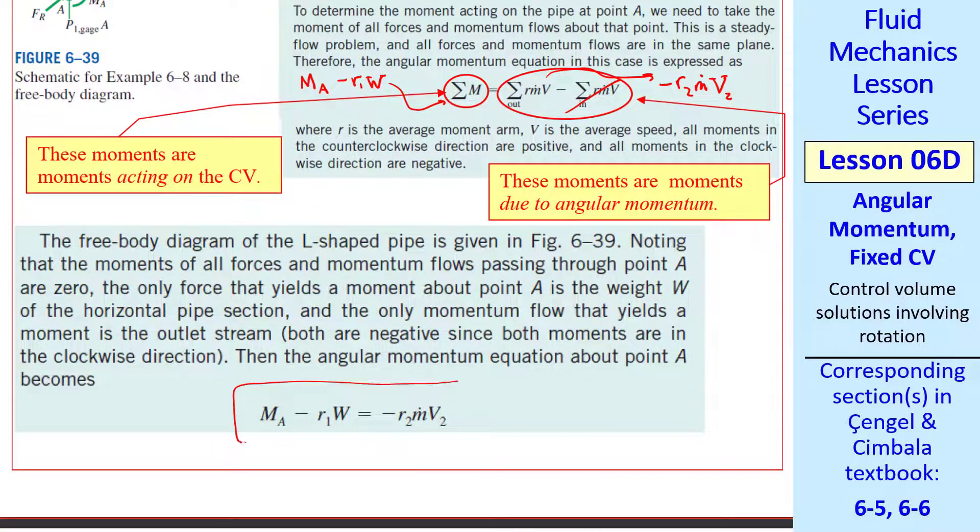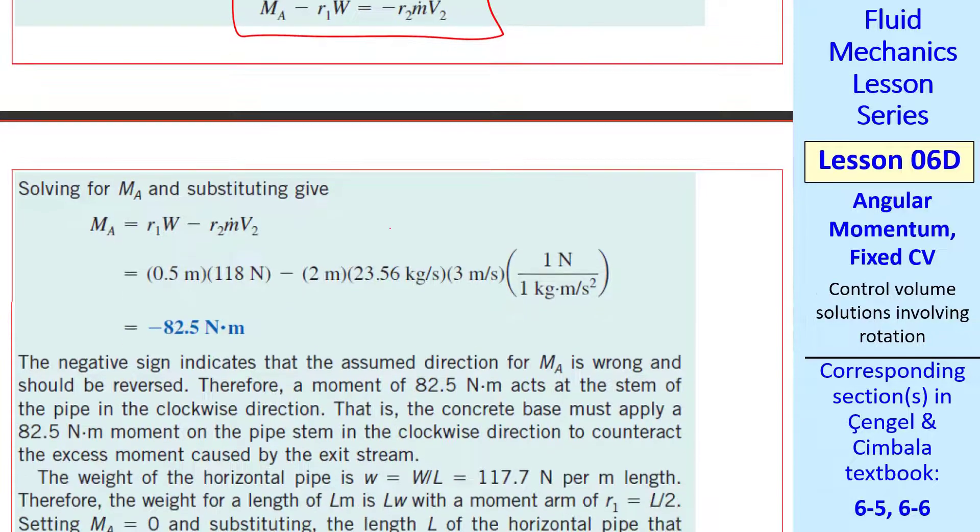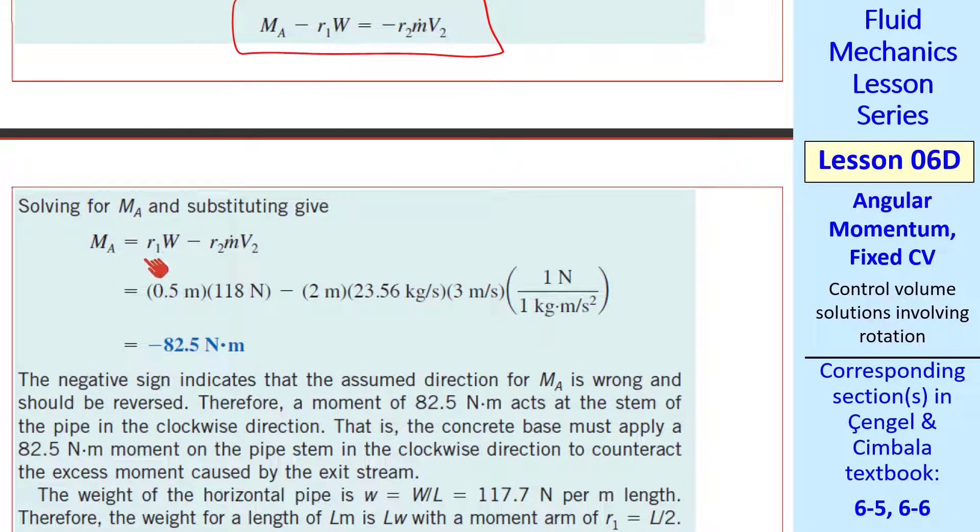Putting it all together, we get this equation, MA minus R1W equals minus R2 M dot V2. The rest of the problem is just solving for MA. From here we get MA equals R1W minus R2 M dot V2. And we plug in the numbers and get our answer for MA.